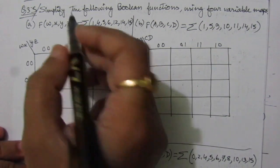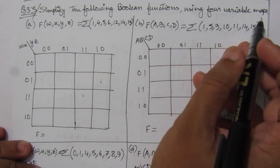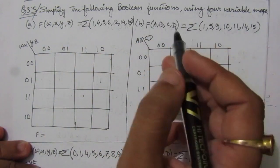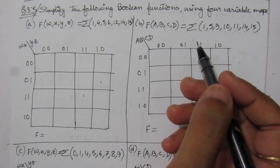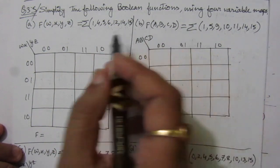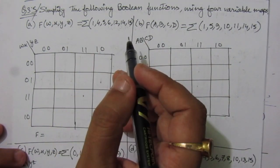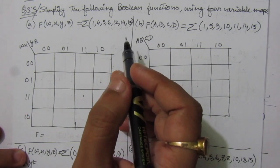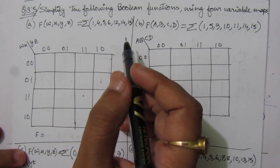The problem is to simplify the Boolean functions using four-variable maps. We have to use a four-variable Karnaugh map and simplify the sum of minterms expressions. We are given four-variable sum of minterms Boolean functions, and from that we have to find out the simplified Boolean function.